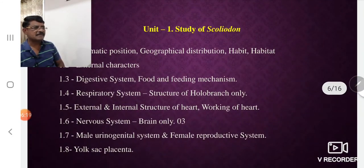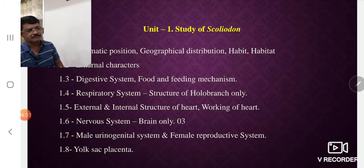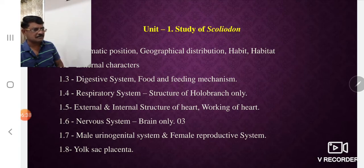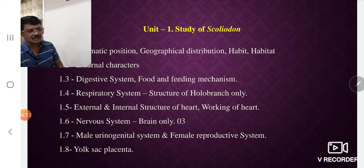In Paper 1, the first unit is the study of Scoliodon. It is a marine fish, also called the dogfish. The content under this unit includes: systematic position, geographical distribution, habit, habitat, external characters, digestive system, food and feeding mechanism, and physiology — including the respiratory system and structure of the hollow branchial chamber.